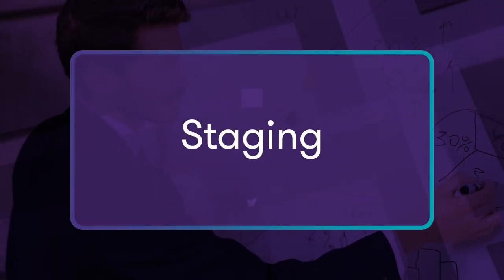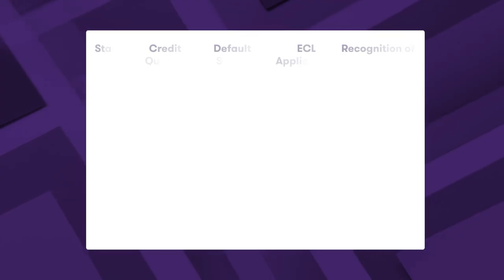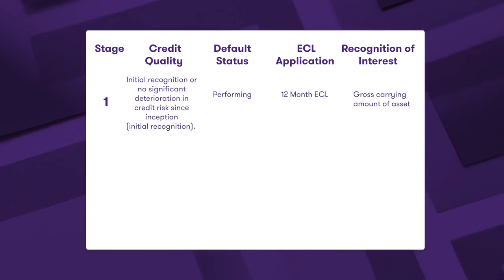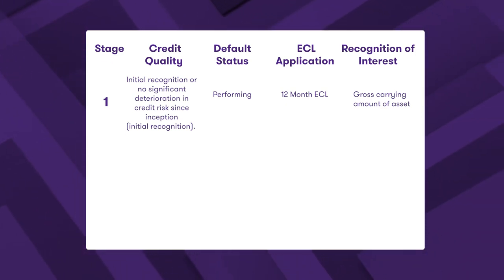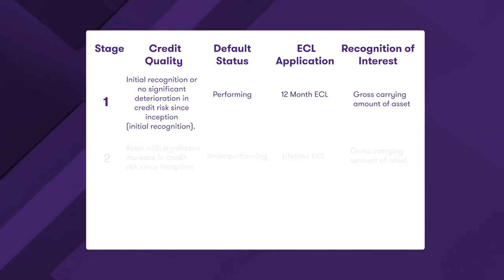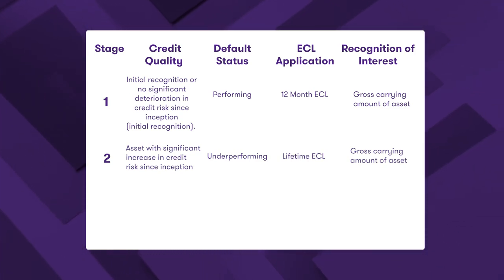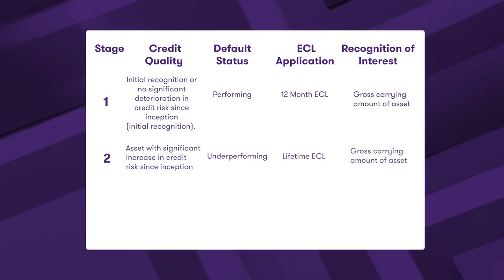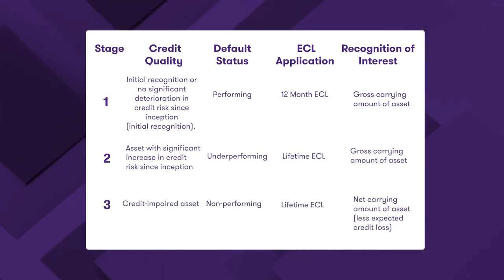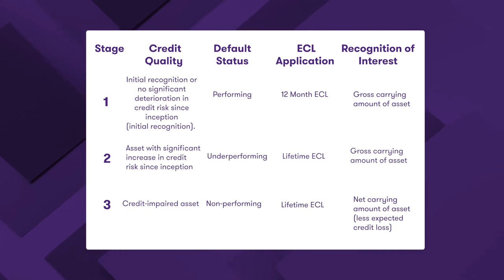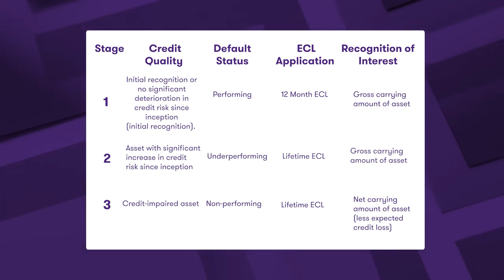Now let's talk about staging. As most of you would know, IFRS 9 has a three-stage ECL model. Stage 1 is where all loans would start, and provisions are measured for loss events expected in the next 12 months only. Stage 2 is where loans would go if credit risk has increased significantly post-origination, and provisions are then measured for loss events expected over the entire lifetime of the loan. Stage 3 is where exposures which have defaulted would fall. Provisions are still made for the entire lifetime, but the provision amount is netted off from the loan amount and any interest income is also recognized only on the net balance.